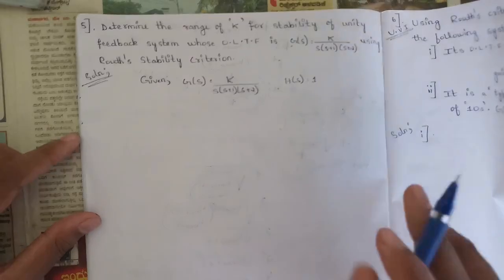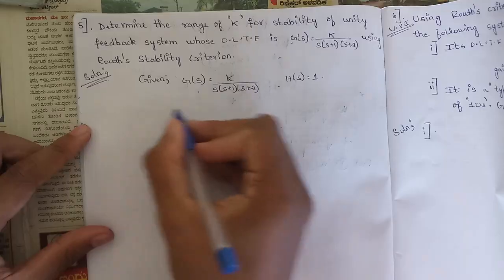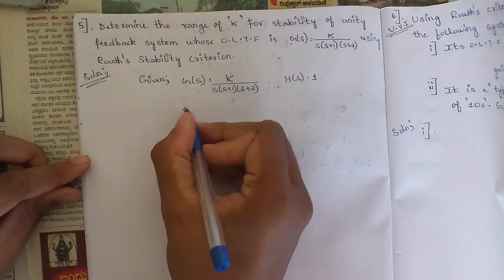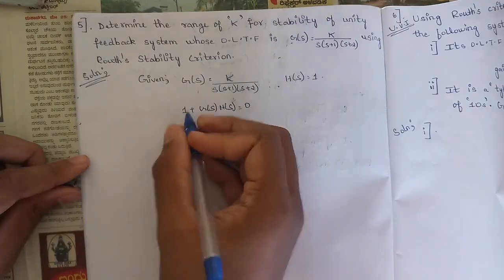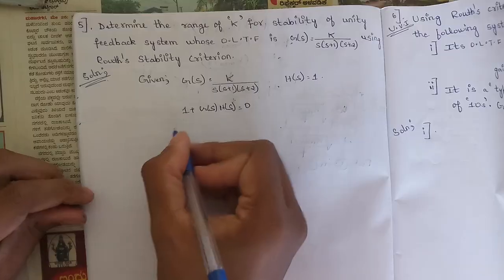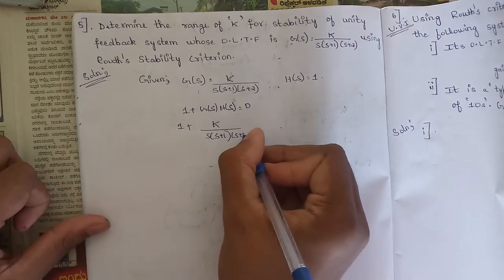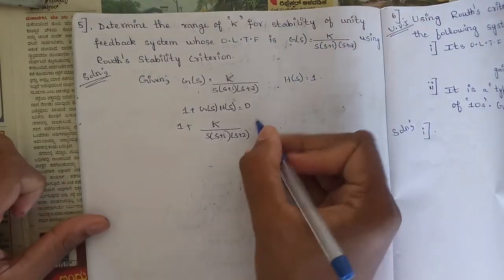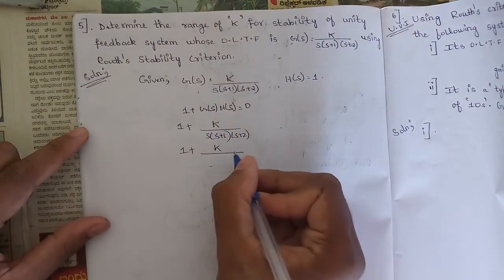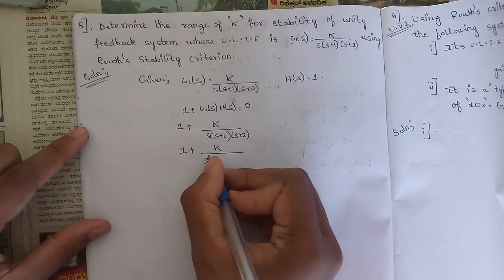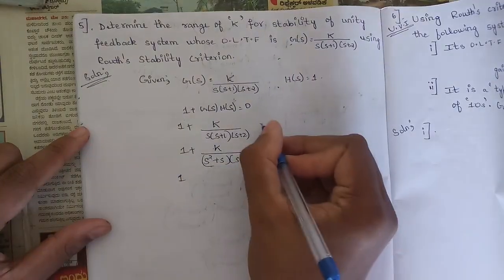Since it's a unity feedback system, H(s) = 1. We find the characteristic equation from the denominator of the closed-loop transfer function, that is 1 + G(s)·H(s) = 0. Substituting, we get 1 + K / [s(s+1)(s+2)] = 0. Multiplying out: s(s+1) gives s² + s, and then multiplying by (s+2) gives s³ + 2s² + s² + 2s.